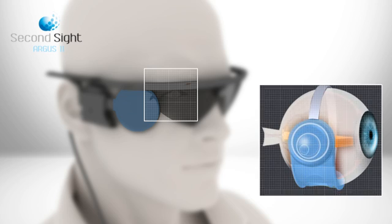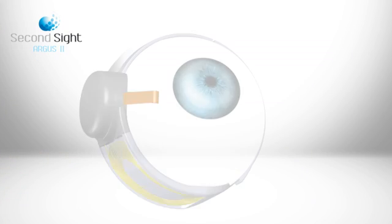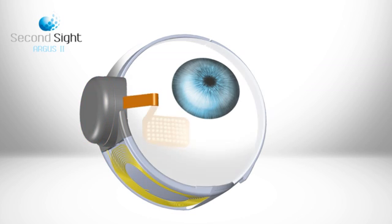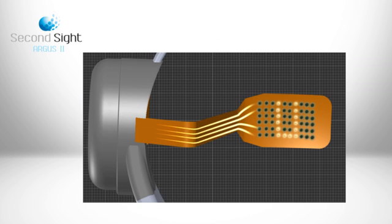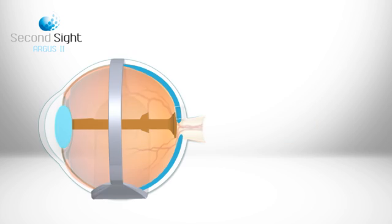The implant consists of a receiver and an array of electrodes. Instructions are received and corresponding signals sent to the array which emit small pulses of electricity.